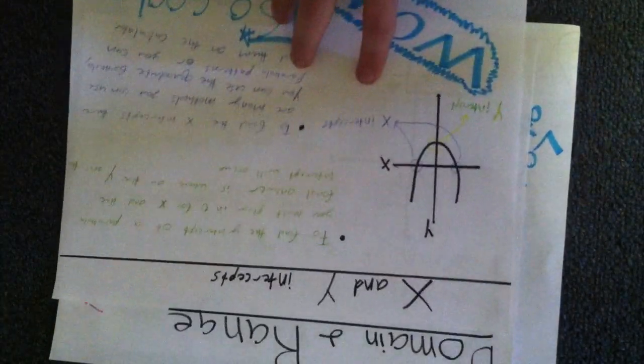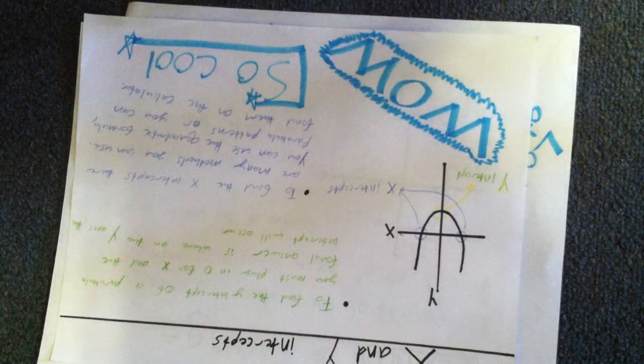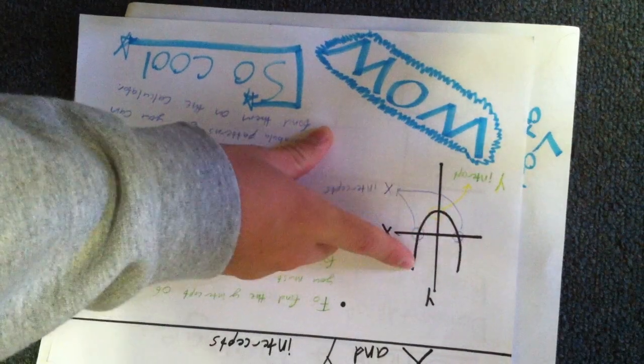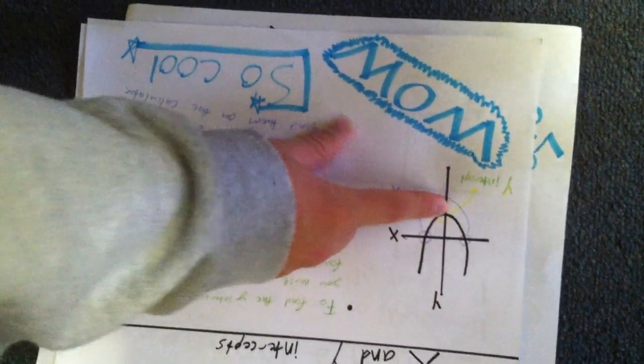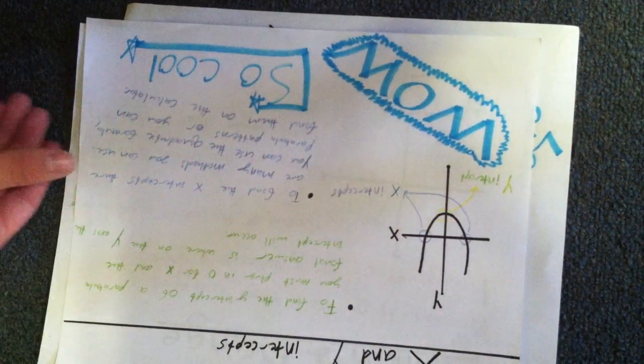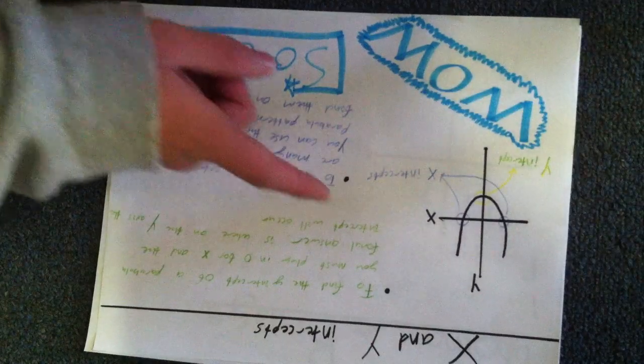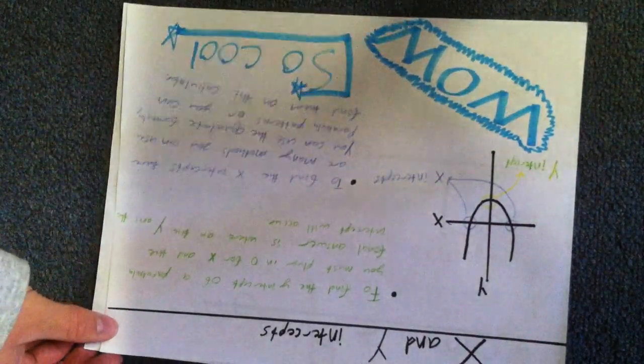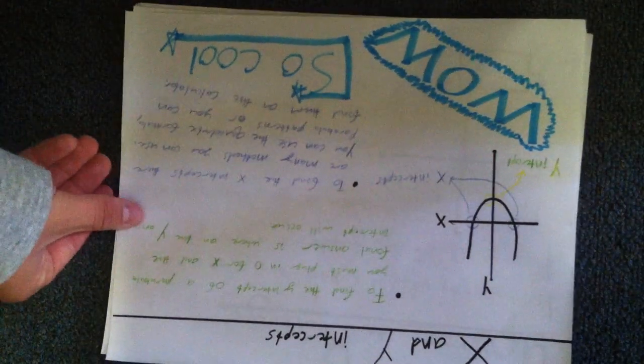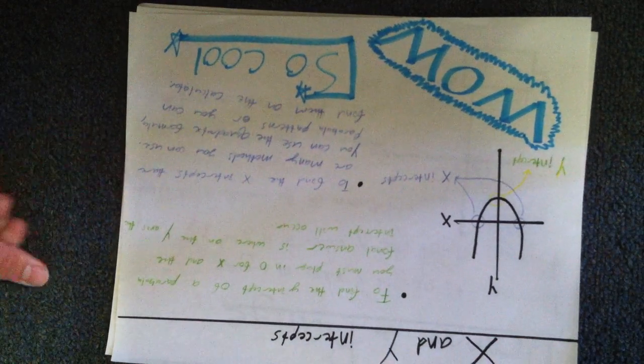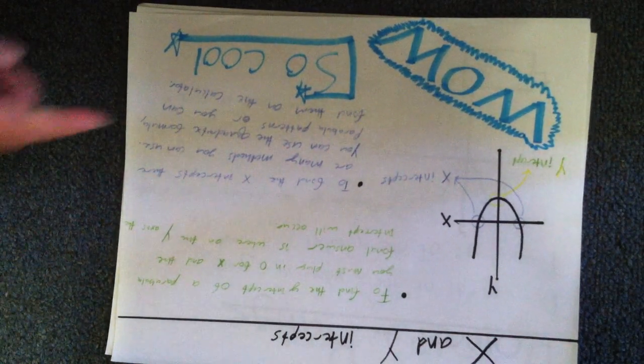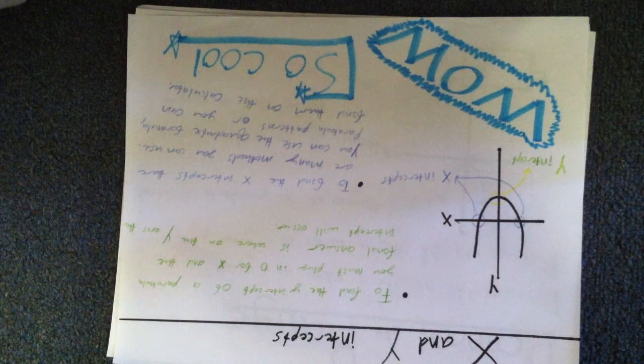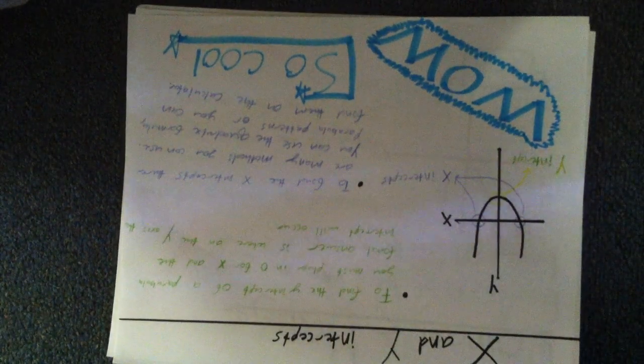These are your x and y intercepts right here. Your x intercepts are where your parabola crosses the x axis, and your y intercepts are where it crosses the y axis. To find the y intercept, you've got to plug in 0 for x in your equation. There are a lot of ways to find the x intercepts. You can use the quadratic formula, you can use your parabola pattern, or you can plug it into the calculator.